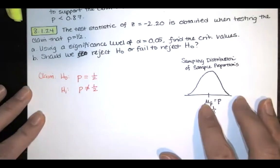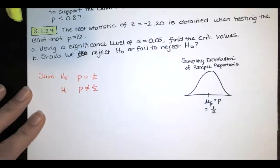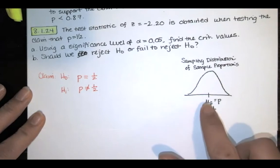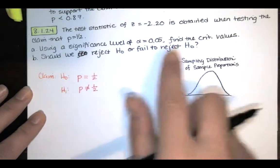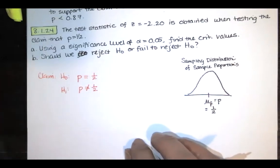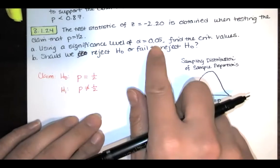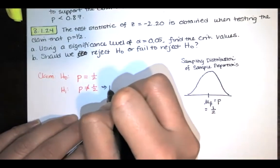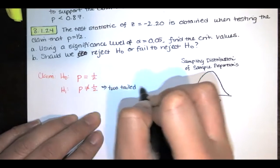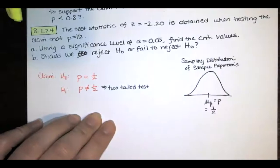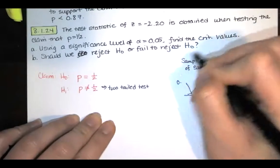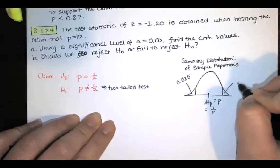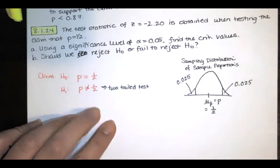And then the question is, using this as our sampling distribution of sample proportions under the assumption that the mean of the sample proportions is the population proportion of one half, we want to find the critical values associated with the significance level of alpha equals 0.05. So we want 5% of the area. Since this is a not equals sign, we're going to use a two-tailed test. That means we want 5% of the area split into two tails. So I've got half of that over here, 0.025 as that area, and the other half over there, that's 0.025 as well.